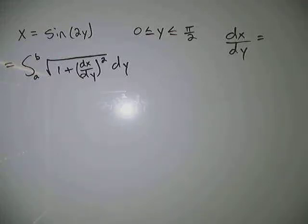Okay, so the problem we got here is we're trying to find the arc length of x equals sine 2y over the interval 0 to pi over 2.